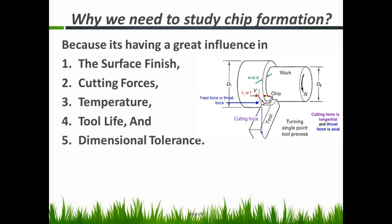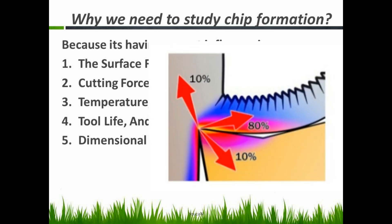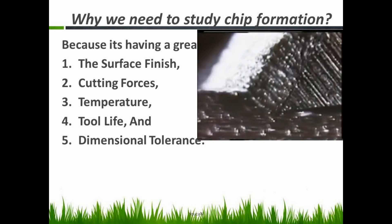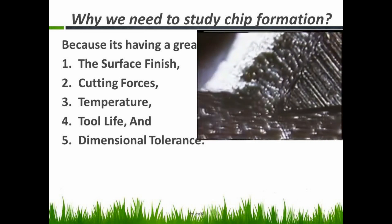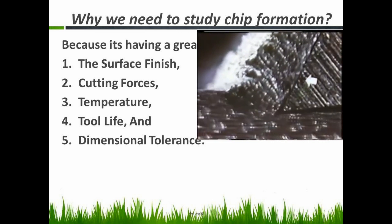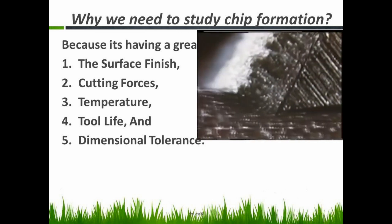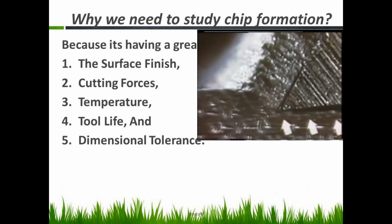The flow of chips affects the cutting forces in the machining process. Number three: temperature — 80% of heat will be carried away from the workpiece by the chips only. Number four: tool life — the flow of chip affects the tool life because it rubs on the rake surface of the tool. And number five: dimensional accuracy of the produced component.